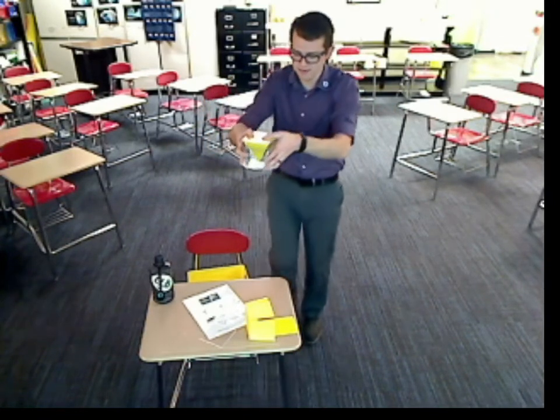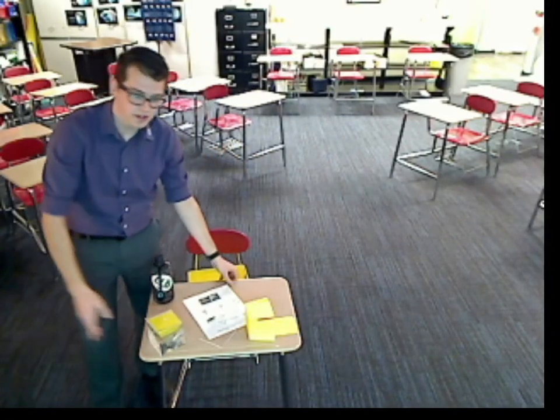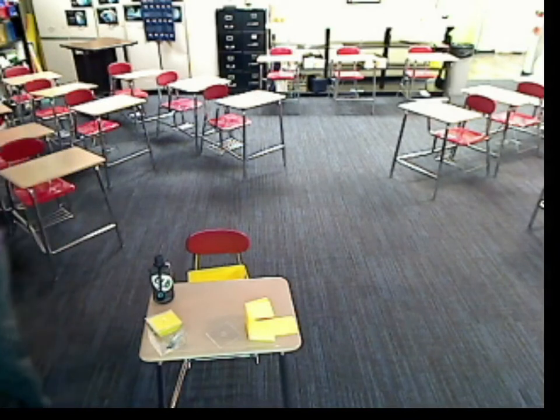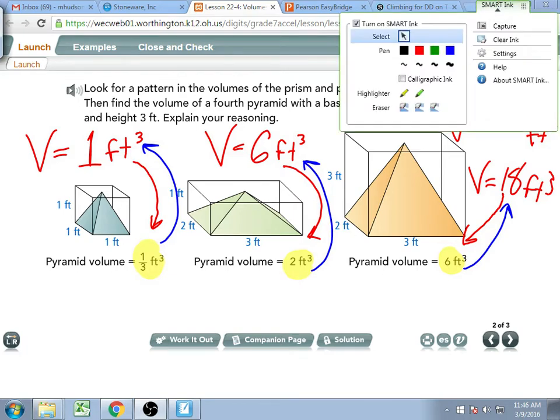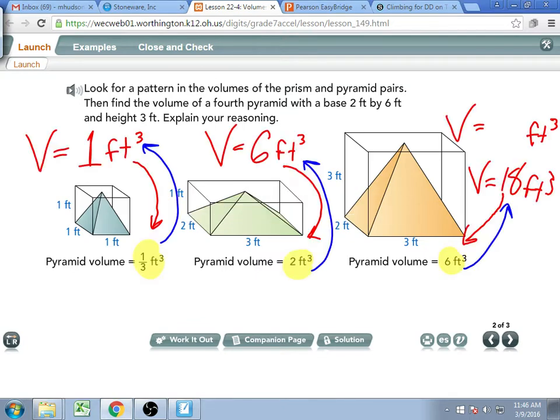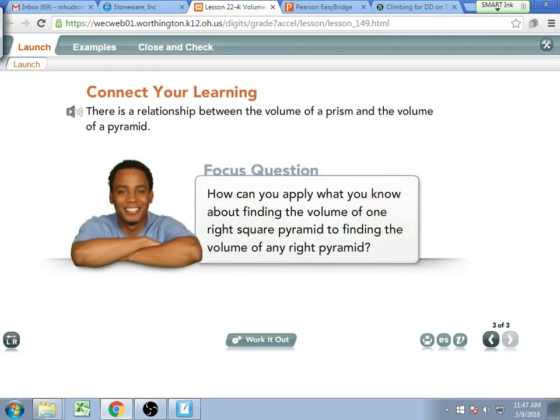So now I essentially have three pyramids worth of water. And if I could get this all the way down in there, it would perfectly fill up that prism. So what that actually tells me is the volume of a pyramid is one third the volume of the prism. And you can see that if we switch back over to that intro problem, all those pyramid volumes, each of them is one third the volume of the prism that it would have been.